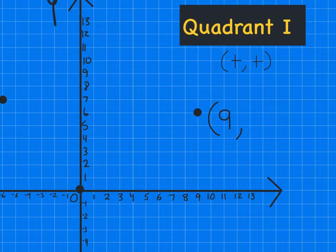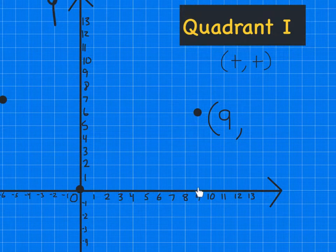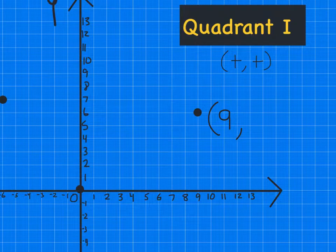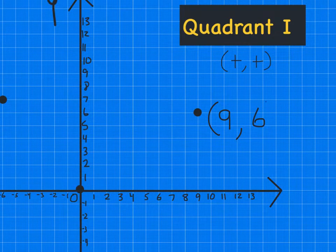And that's positive because I went to the right. So then my next direction would be to go up since it is above the line. One, two, three, four, five, six. So where my nine x line and my six y line intersect is where my point is. So this point is at nine, six.